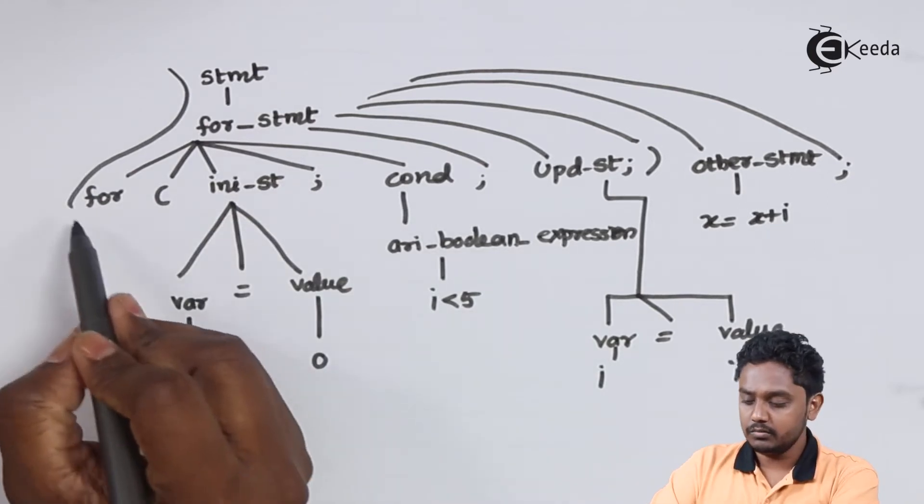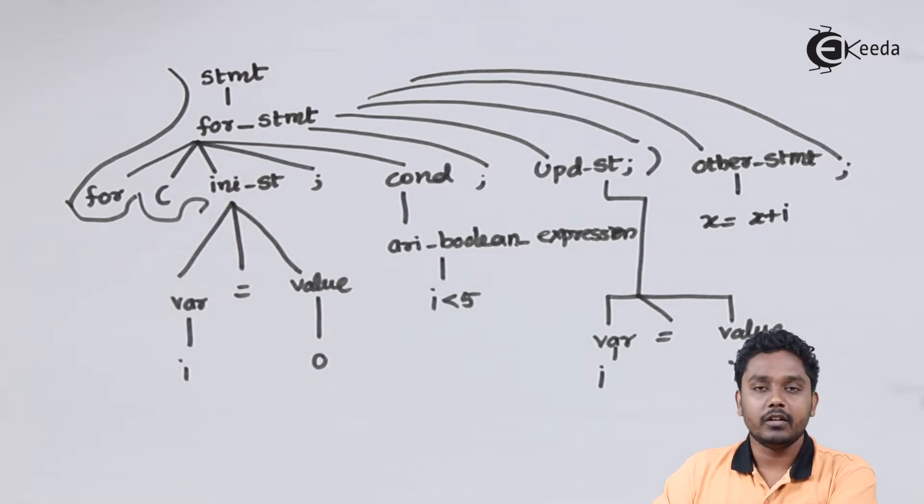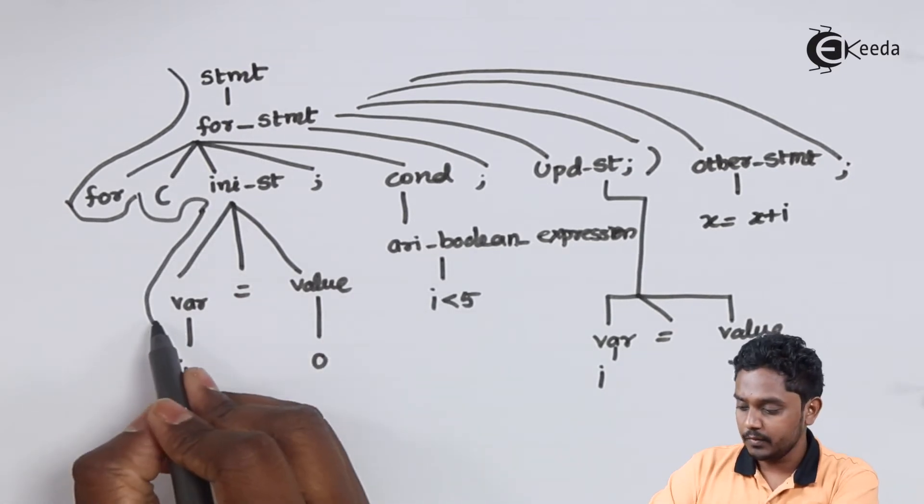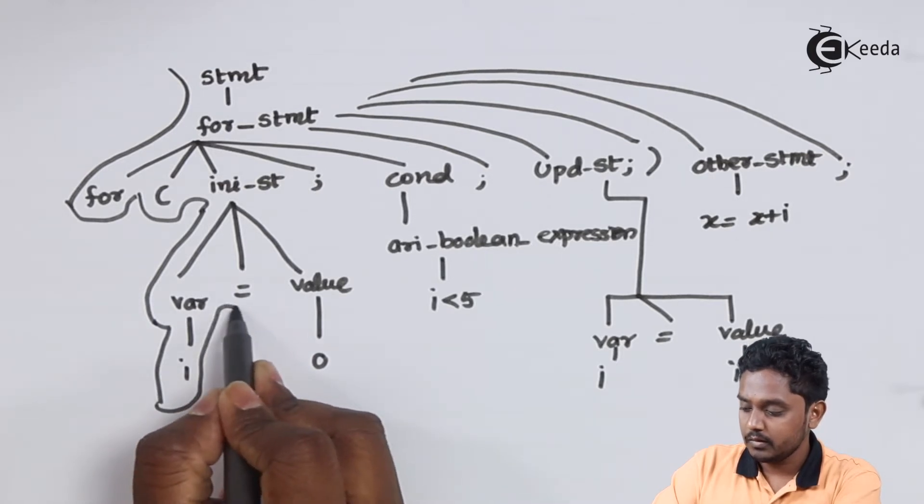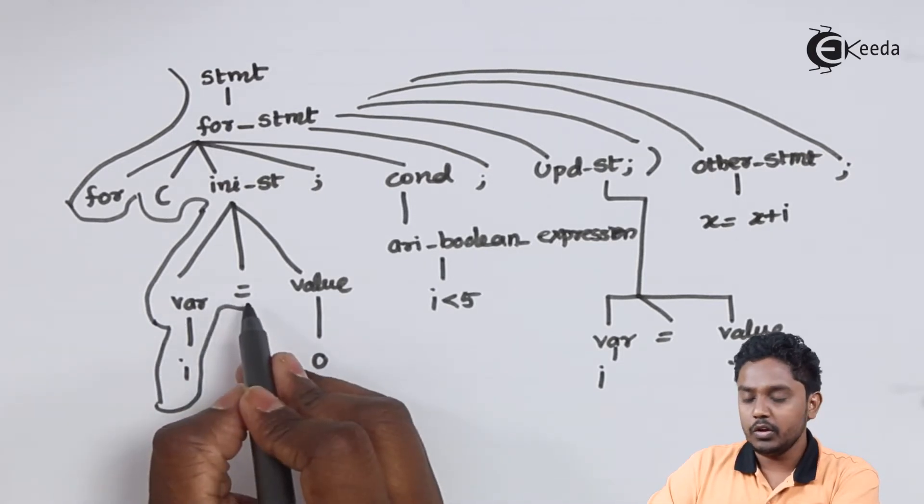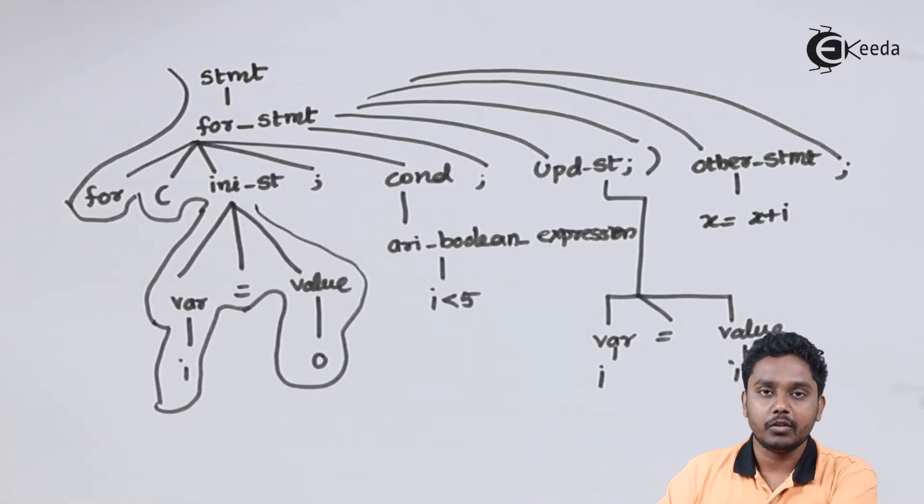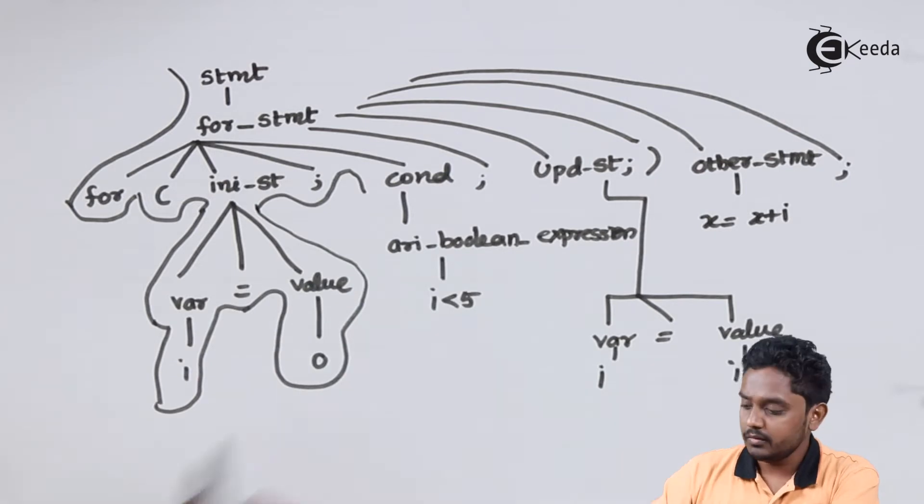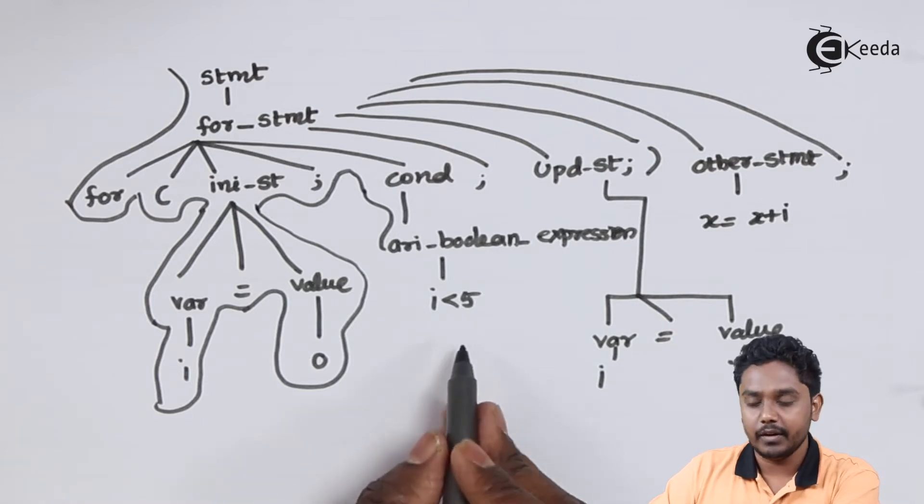It contains a for followed by bracket in which there is initialization part followed by a termination semicolon. Within the initialization we have a variable i initialized to 0 using the equal operator. Finishing the initialization with semicolon. We enter to condition. The condition is a boolean expression over here it is i less than 5.